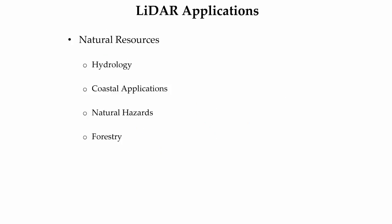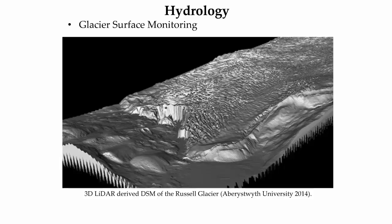LiDAR applications in the natural resources environment will be discussed next. Hydrology, coastal, natural hazards, and forestry applications will each be discussed in greater depth on subsequent slides. Hydrologists study the movement, distribution, and quality of water on Earth. Modeling these water parameters depends on accurate elevation data which can be provided by LiDAR-derived elevation products. The collection and analysis of LiDAR data is frequently used in hydrology applications including surface monitoring of glaciers such as the Russell Glacier on the Greenland Ice Sheet as shown in the graphic, snowpack depth, terrain morphology, ground surface elevation, and wetland environment delineation.